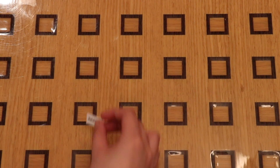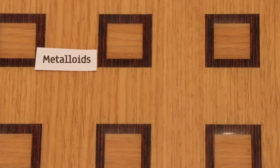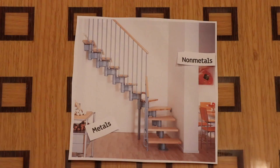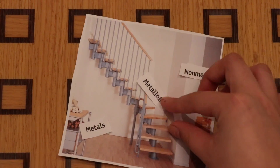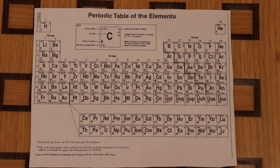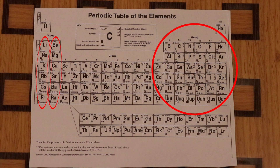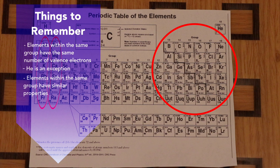Moving on to metalloids — metalloids have properties of both metals and non-metals and border the staircase. Examples include boron, silicon, arsenic, tellurium, germanium, and antimony. For Groups 1, 2, and 13 through 18, elements within the same group have the same number of valence electrons, although helium is an exception, and therefore those groups have very similar properties.